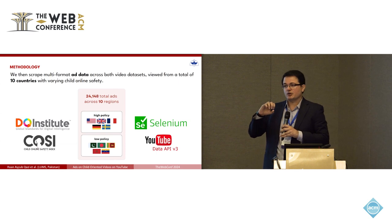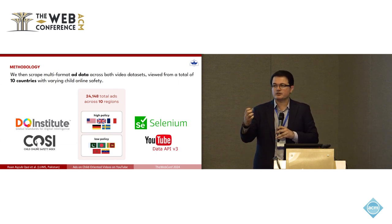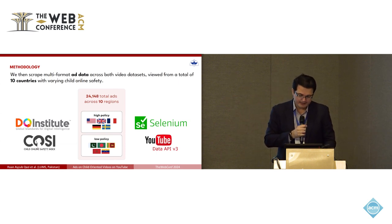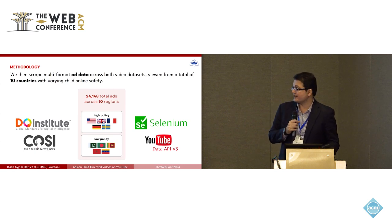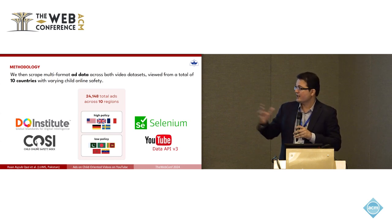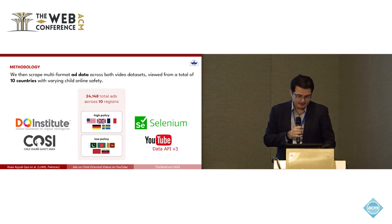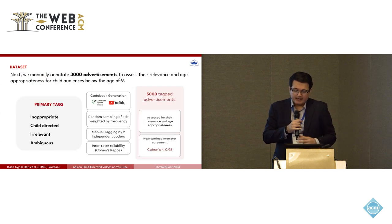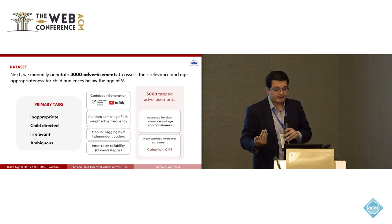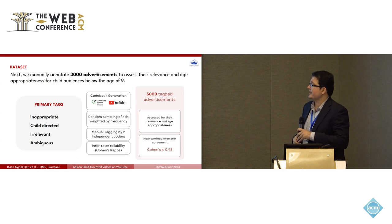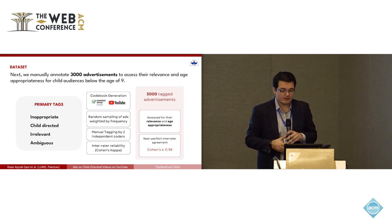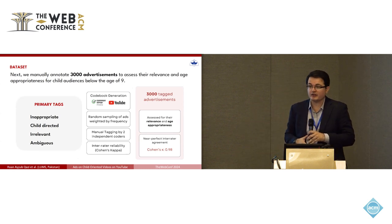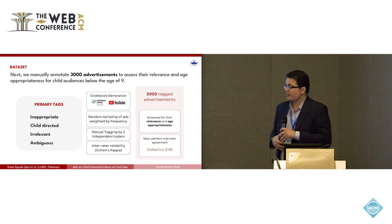To get metadata for the ads and main videos, we used the data API to fetch title, description, tags, and similar information. We then manually annotated a random sample of advertisements to assess their relevance and age-appropriateness for child audiences below the age of nine.